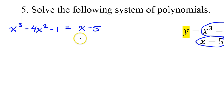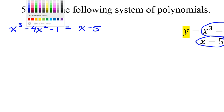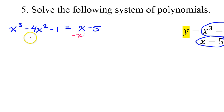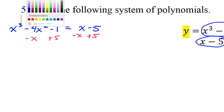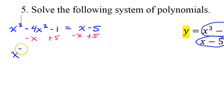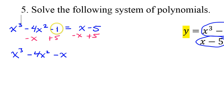So they're equal to each other. Now I just need to solve this equation for x. I'm going to get zero on one side by subtracting x from both sides and adding five to both sides. That's going to give me x to the third power minus four x squared minus x. These don't combine, so I'm just going to write minus x. Negative one and positive five make positive four, and that will now equal zero.